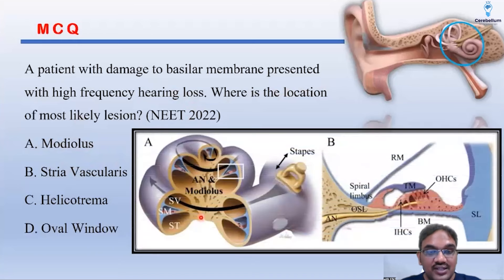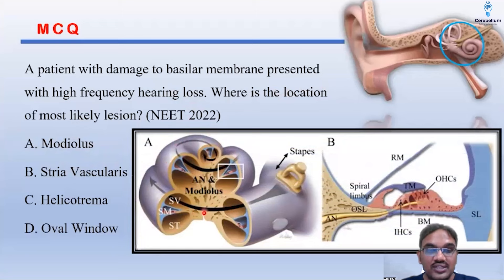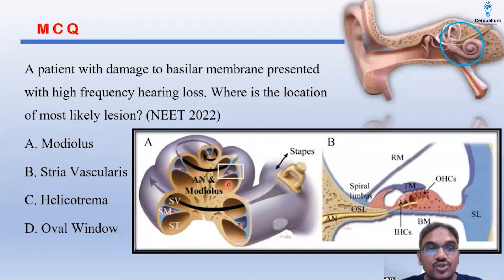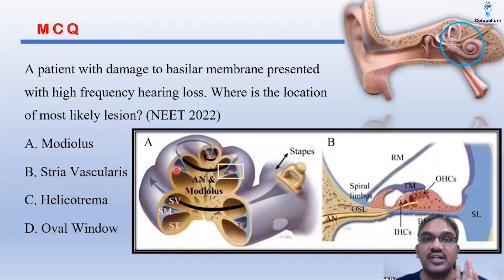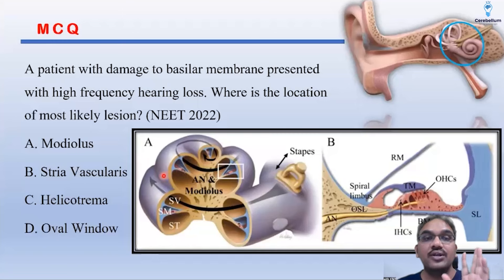This is the central bony axis, and your cochlea is winding around it. So this is the central modiolus. If there is a problem in the modiolus, then all nerves should get affected — not only high frequency hearing loss, but all frequencies. But in the question, only high frequency hearing loss is mentioned, meaning only the basal coil of the cochlea is getting affected.